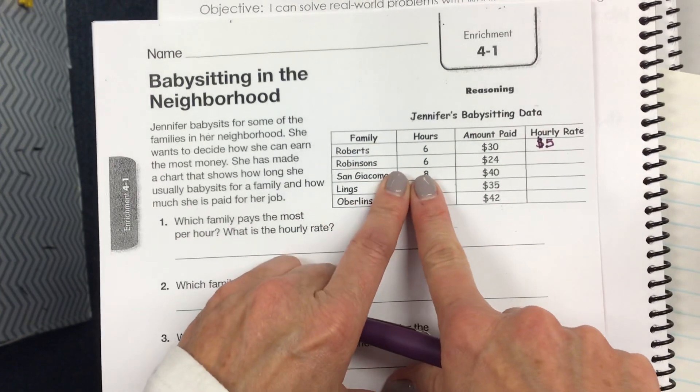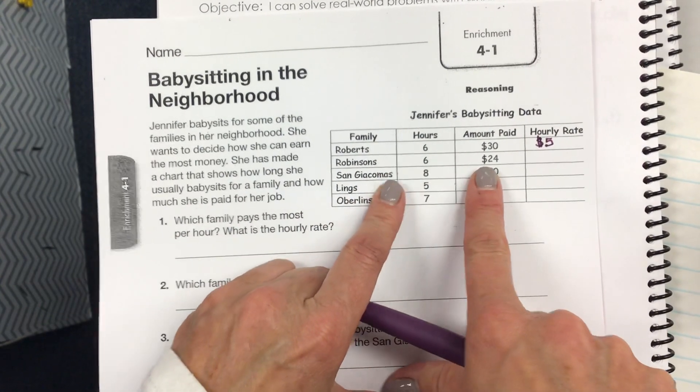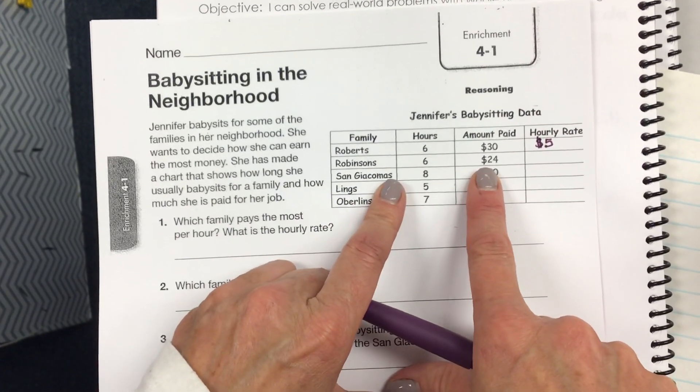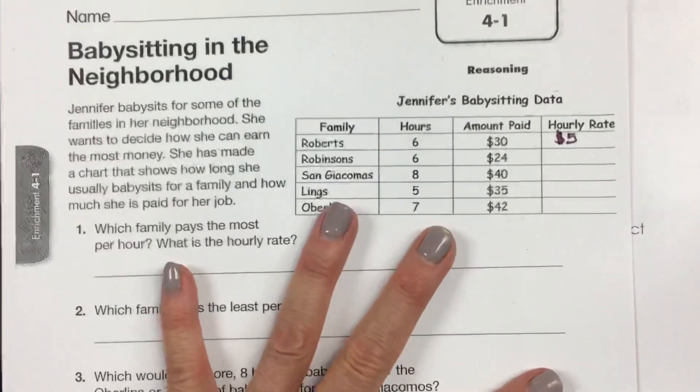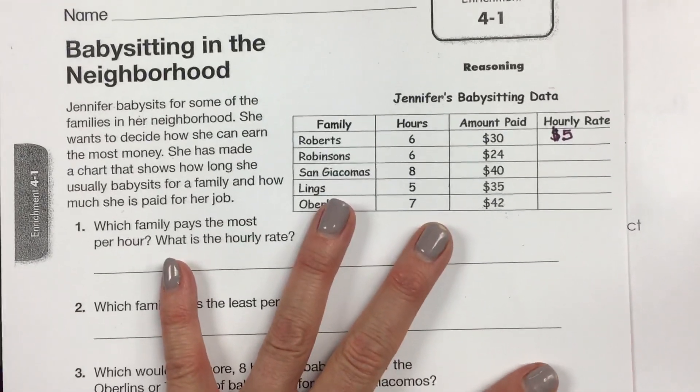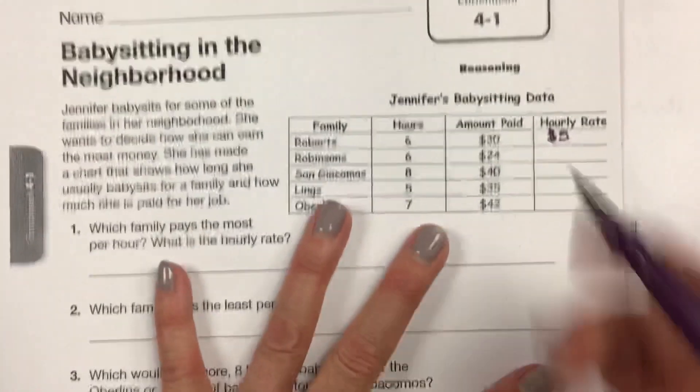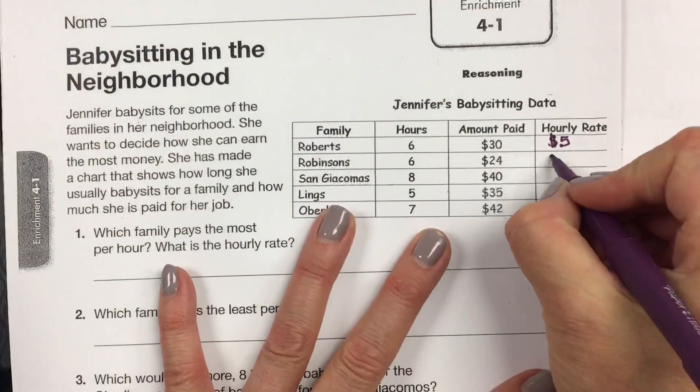The Robinsons — for six hours she makes twenty-four dollars. How much are they paying her per hour? Eloise: four dollars.